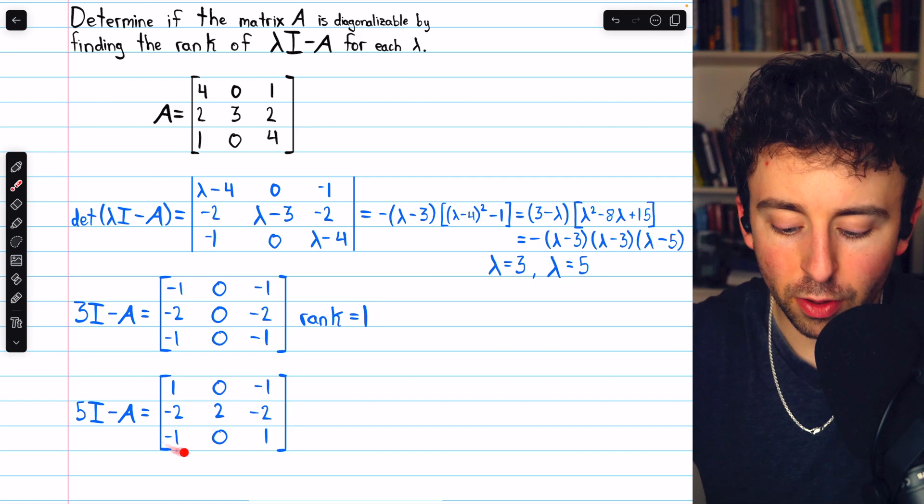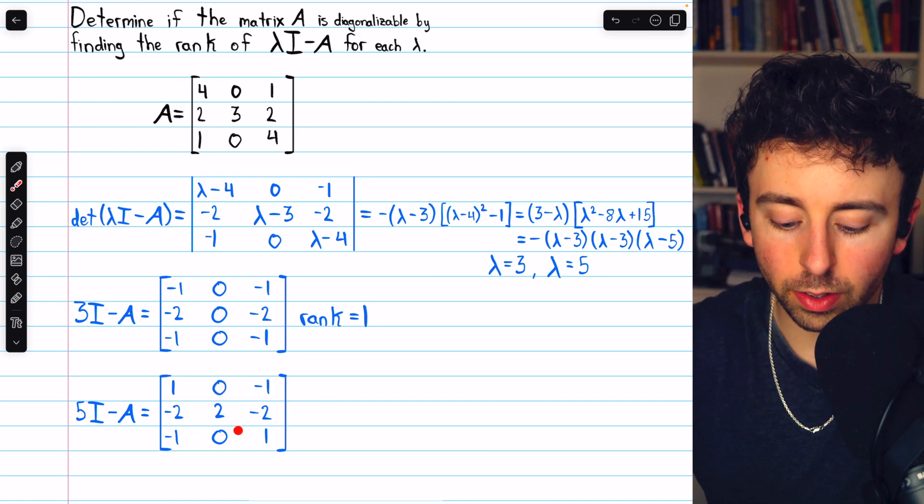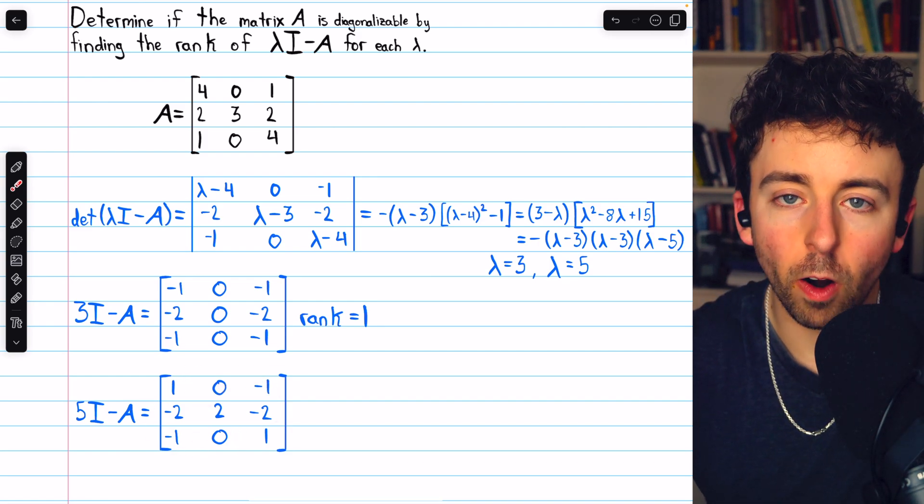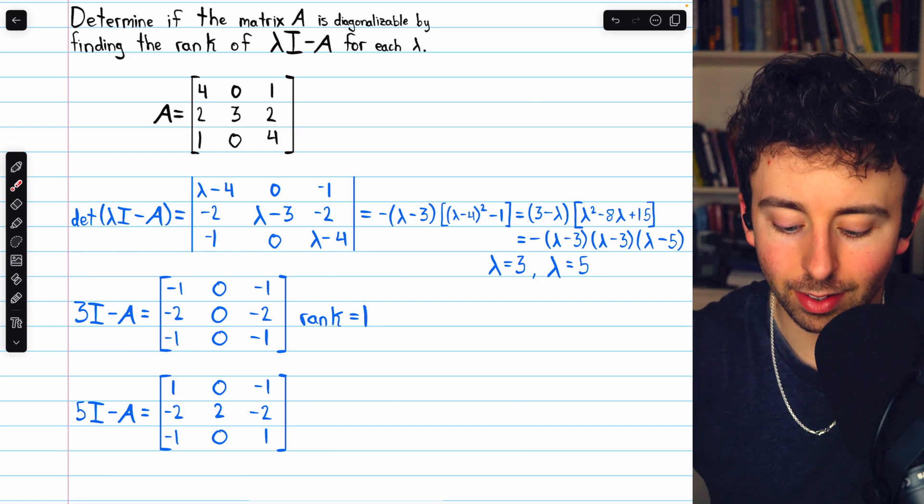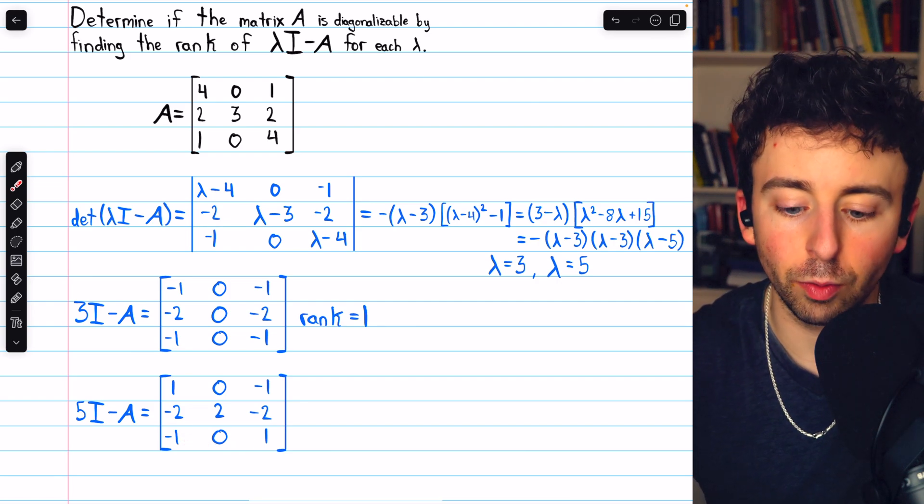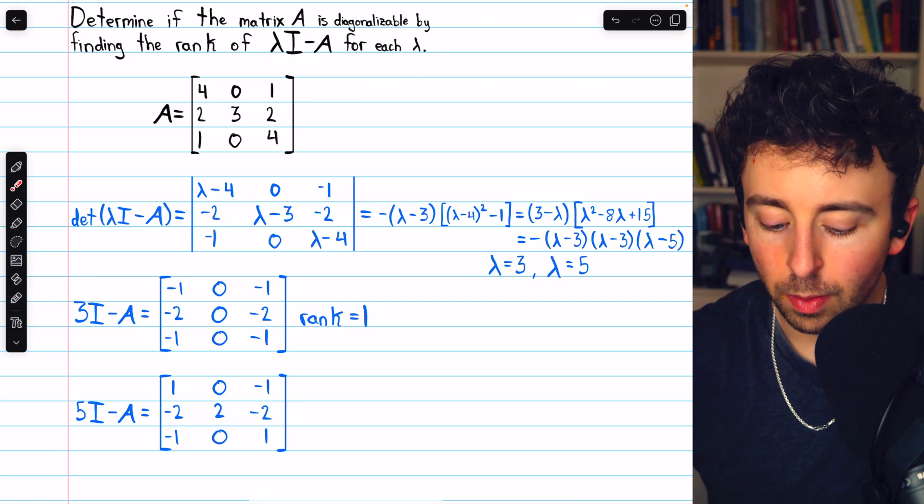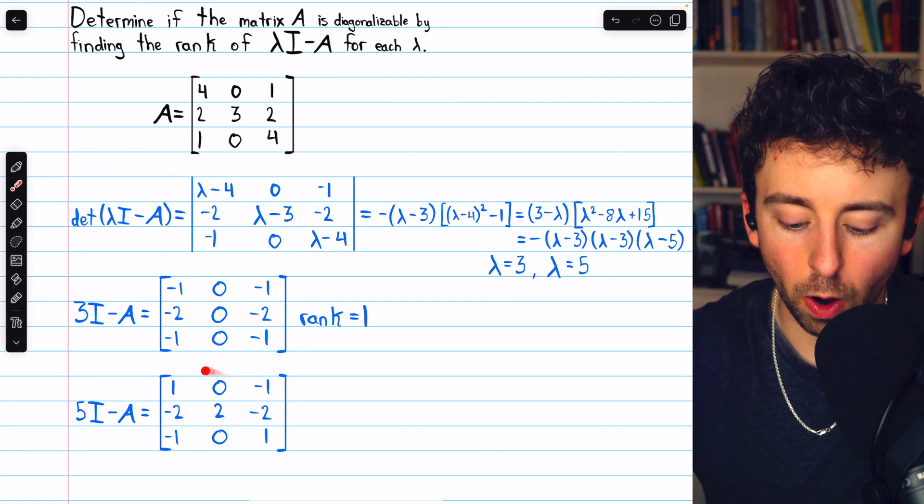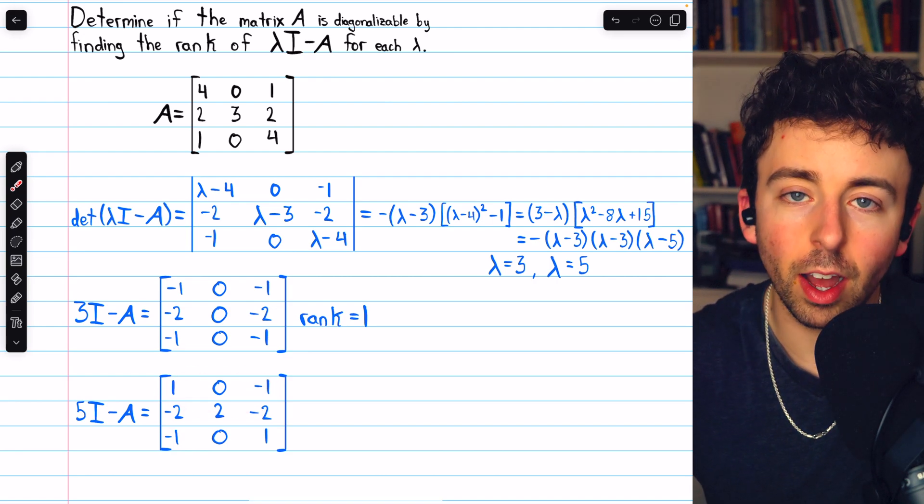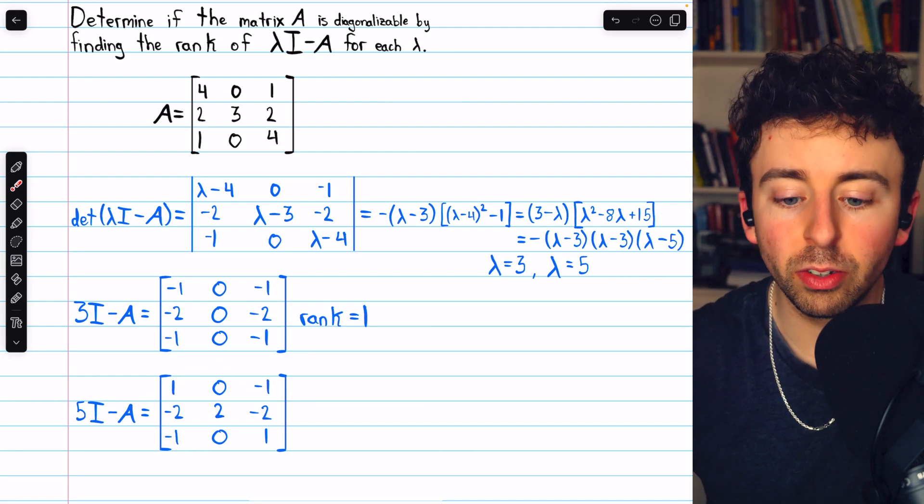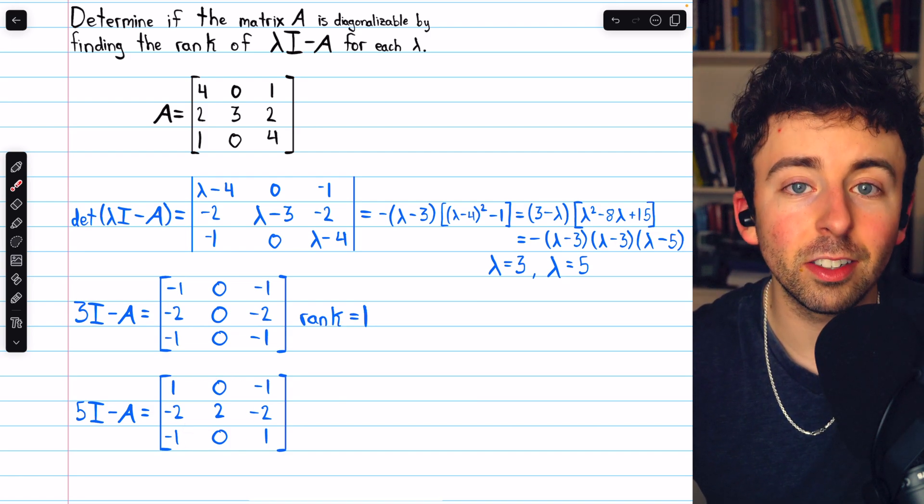We can determine the rank of this other matrix by looking at the rows. Row 1 and row 3 are not linearly independent since row 3 is just negative 1 times row 1. But clearly, rows 1 and 2 are linearly independent. They are not scalar multiples of each other. So the rank of this matrix is 2.